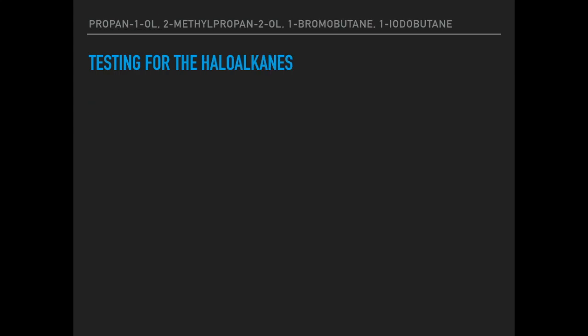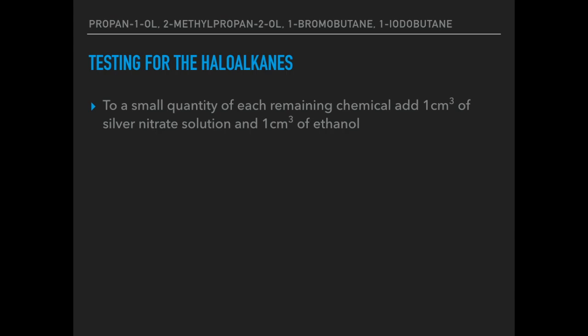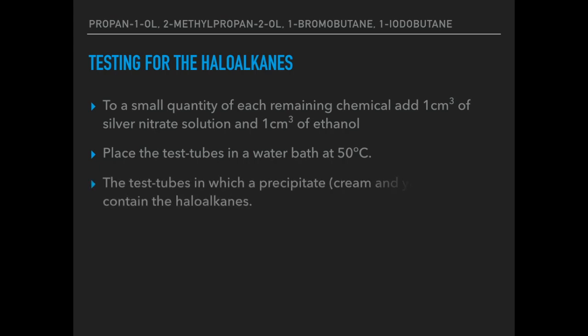The next test is for the haloalkanes — we've got two: 1-bromobutane and 1-iodobutane. To a small quantity of each of the remaining chemicals, add 1 cm³ of silver nitrate solution and 1 cm³ of ethanol. The role of the ethanol is to help the chemicals mix together, otherwise they would just form two separate layers. Place the test tubes in a water bath at 50°C. The test tubes in which a precipitate forms contain haloalkanes, giving a cream precipitate and a yellow precipitate.